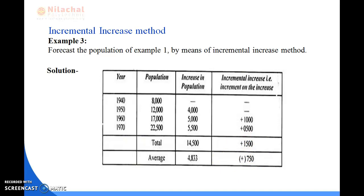To summarize: IA (or X) equals 4,833, which is the average arithmetical increase, and IC (or Y) equals 750, which is the average incremental increase. These values will now be substituted into the formula.